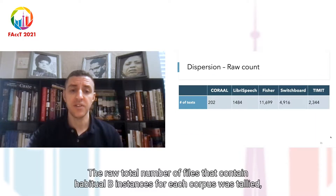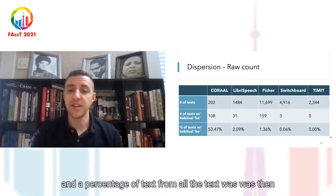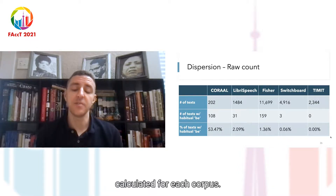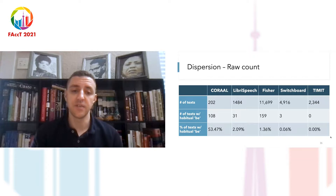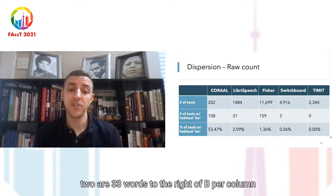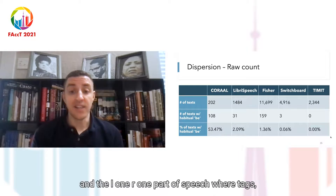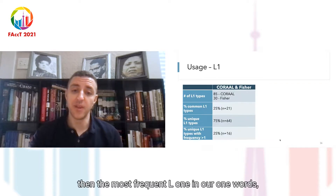In terms of dispersion, you can see the number of texts here. The number of texts with habitual B is very drastically different between the corpora. Over 50% of CORAAL's texts have an instance of habitual B, where only 2% of LibriSpeech, 1% of Fisher, less than 1% of Switchboard, and none of TIMIT have files that contain habitual B.